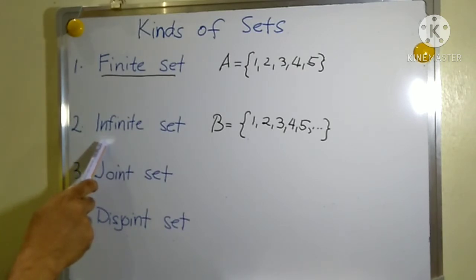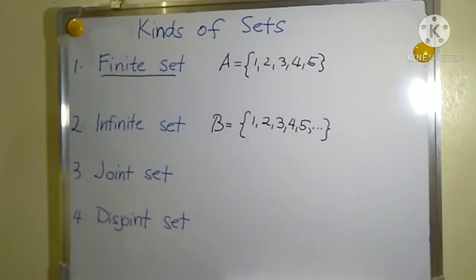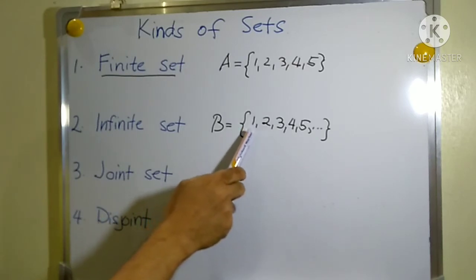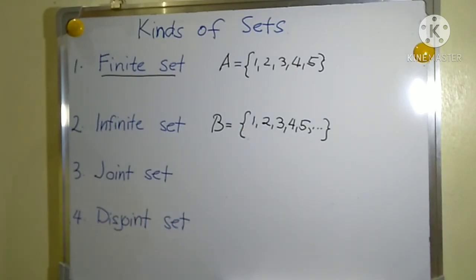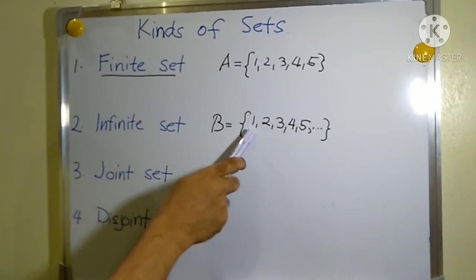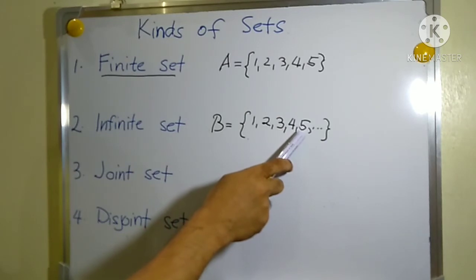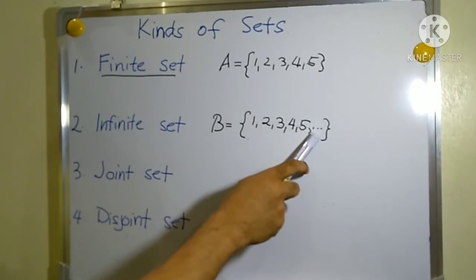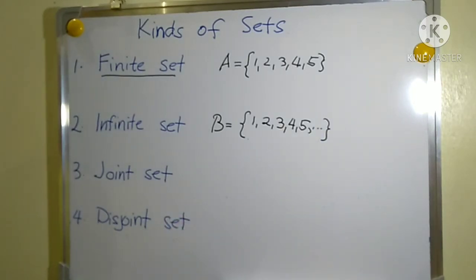The second kind of set is called an infinite set. An infinite set is a set whose elements cannot be counted. For example, we have set B — the set of counting numbers. In the set of counting numbers there is no end. That is why you notice in this set we have written one, two, three, four, and five, and after five we put the ellipses to indicate that there are still numbers to be counted and there is no end.